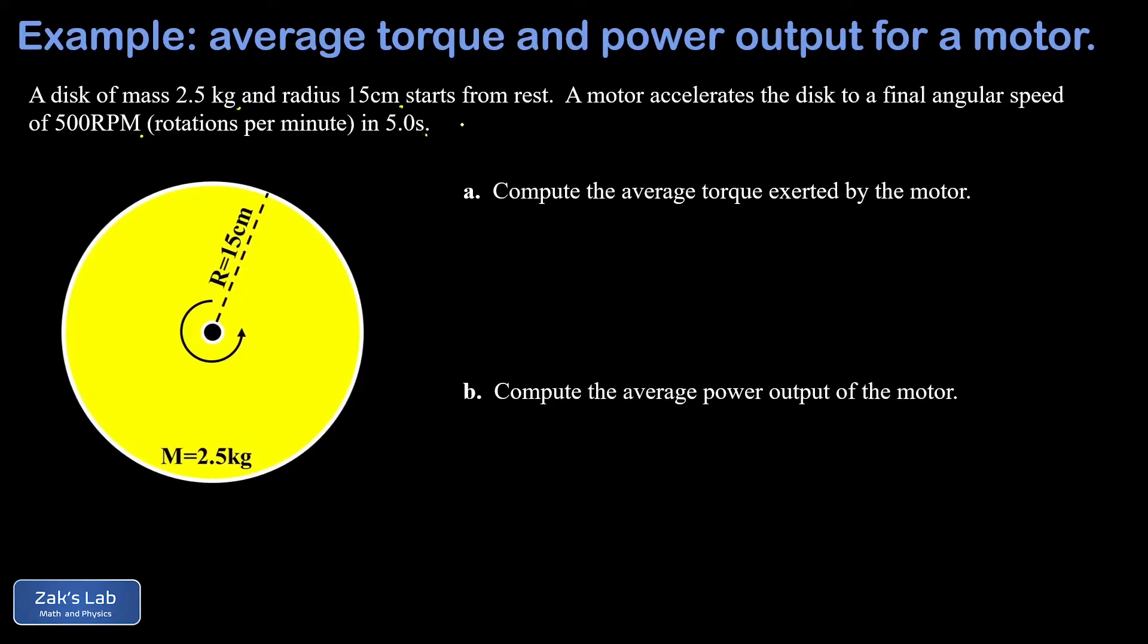In part a, we're going to compute the average torque exerted by the motor, and in part b, the average power output of that motor. So to prepare for part a, we want to convert that 500 RPMs into SI units—we want radians per second for that.